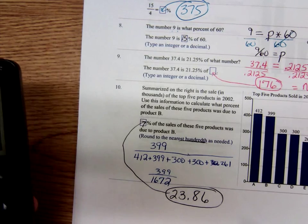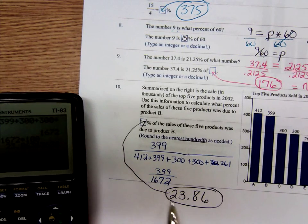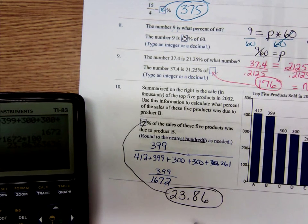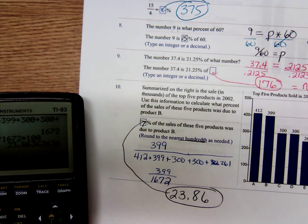So product B was 23.86 percent of all of those sales. You take the number of items product B divided by the total.